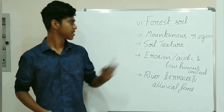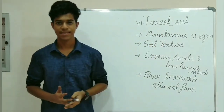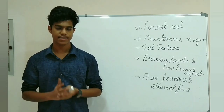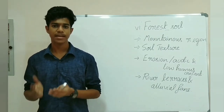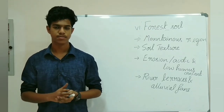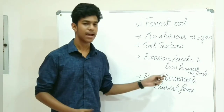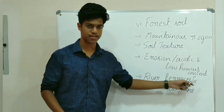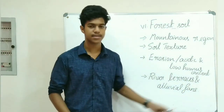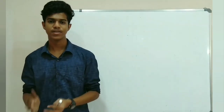The last soil is forest soil. Forest soil is found in mountain or hilly regions where sufficient rainfall is available. The texture of forest soil is loamy and silty on the valley sides and coarse-grained on the upper slopes. Forest soils are often prone to erosion and are acidic with low humus content. However, forest soil found on river terraces and alluvial fans is very fertile.